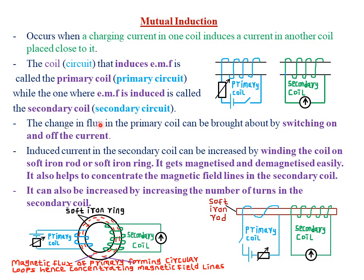You can be asked how you can bring about the change in magnetic flux. The change in flux in the primary coil can be brought about by switching on and off the current, because the primary coil carrying current has a magnetic field around it, which is linked to the secondary coil. When you switch on and off the current, you create a change in the flux, which leads to induction of current in the secondary coil. The induced current will be observed by the deflection of the galvanometer, which will deflect either to the right or to the left depending on the direction of the current.